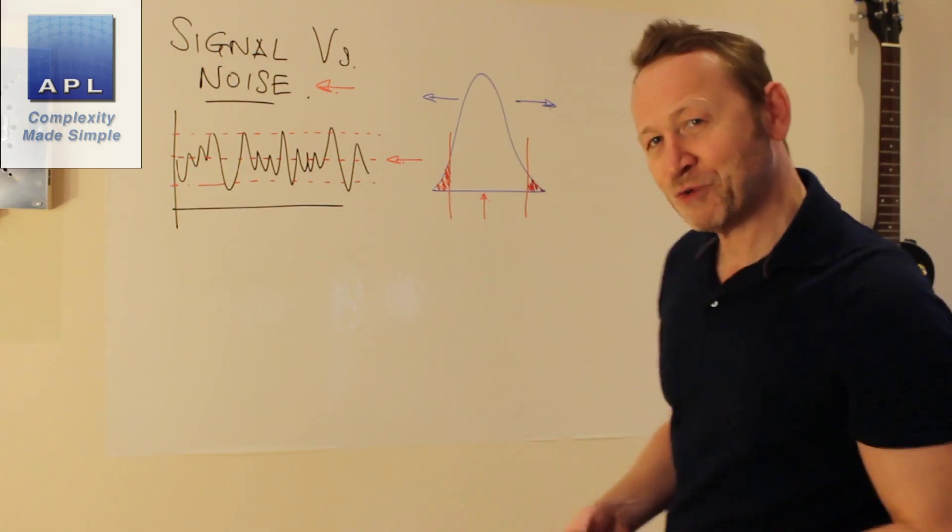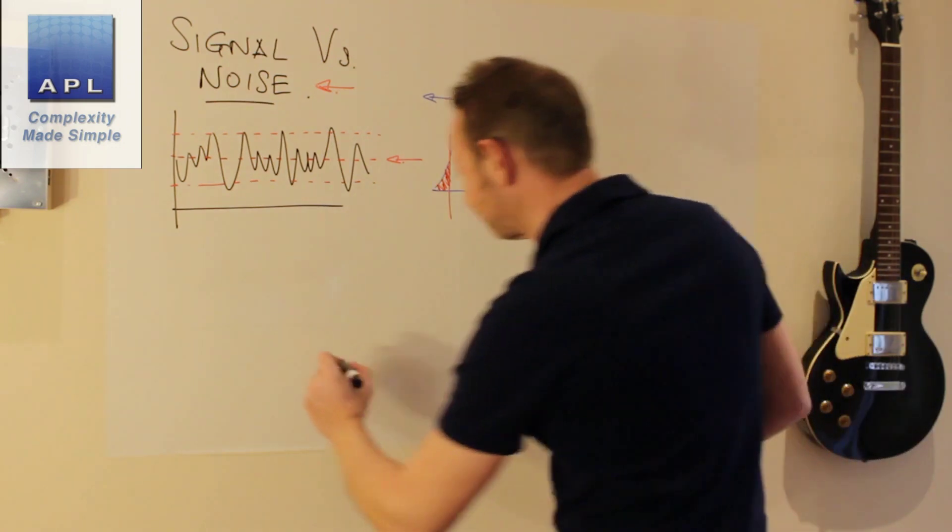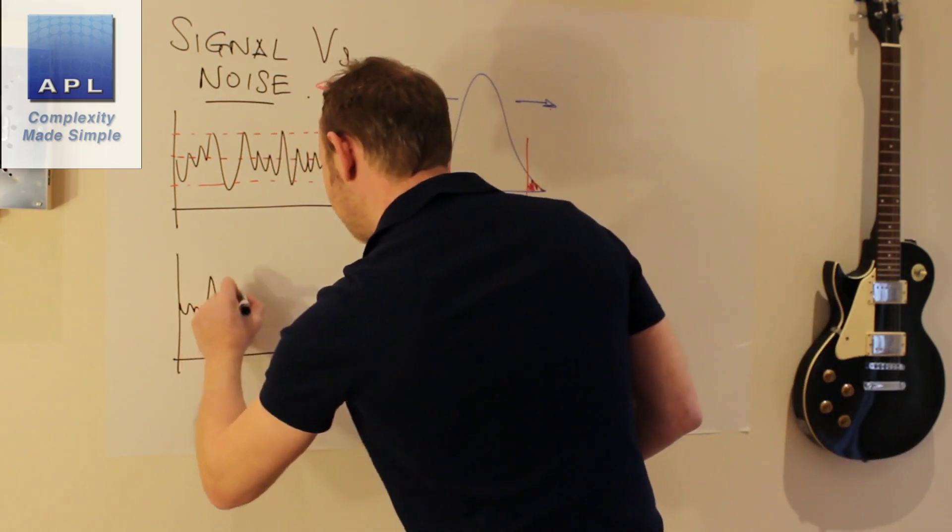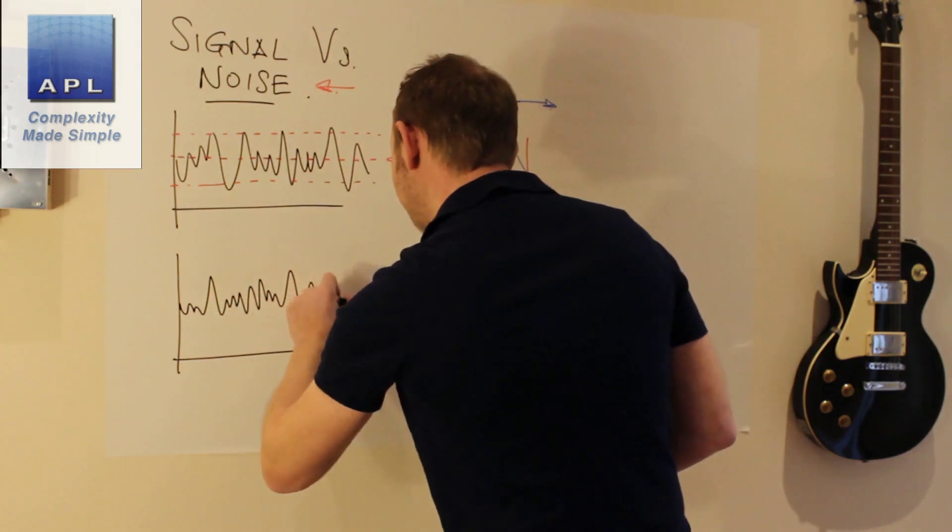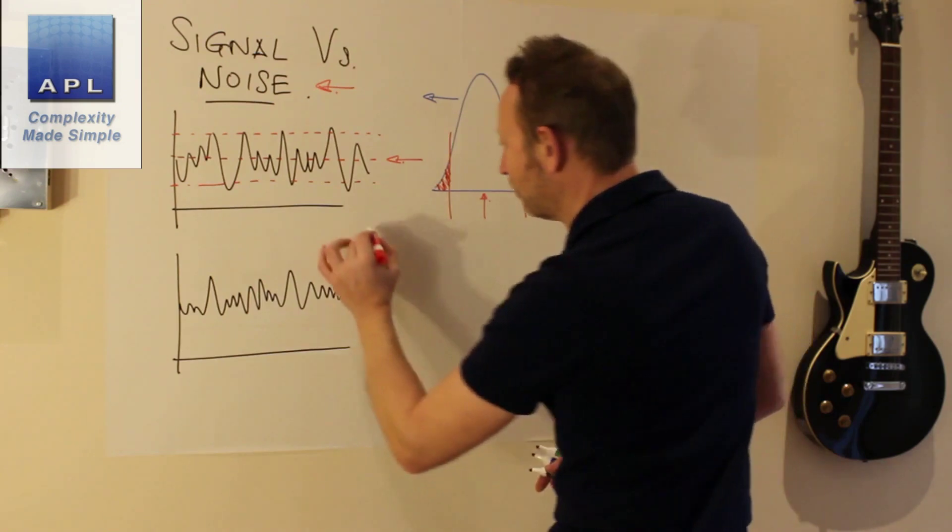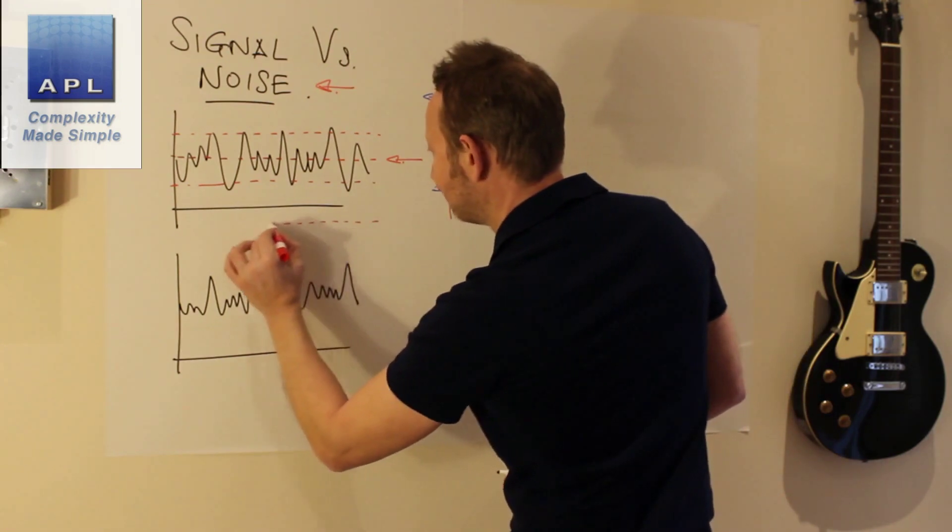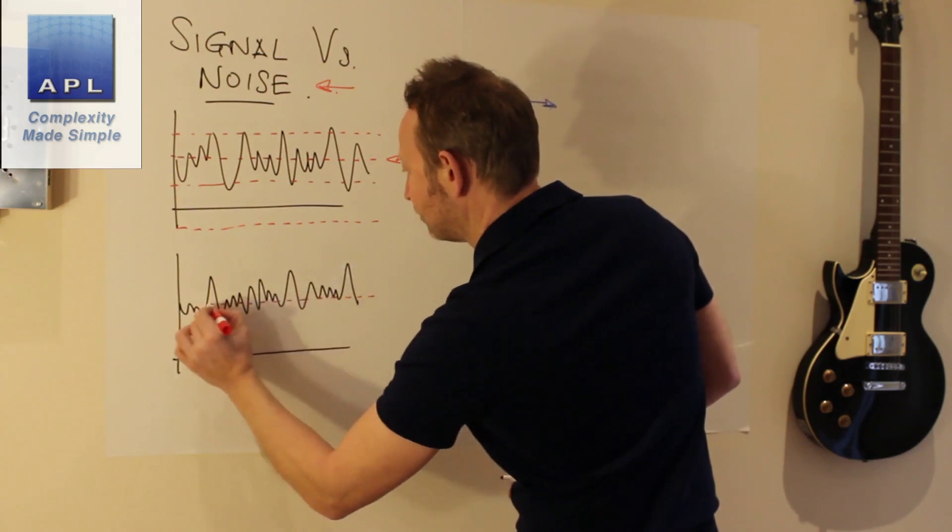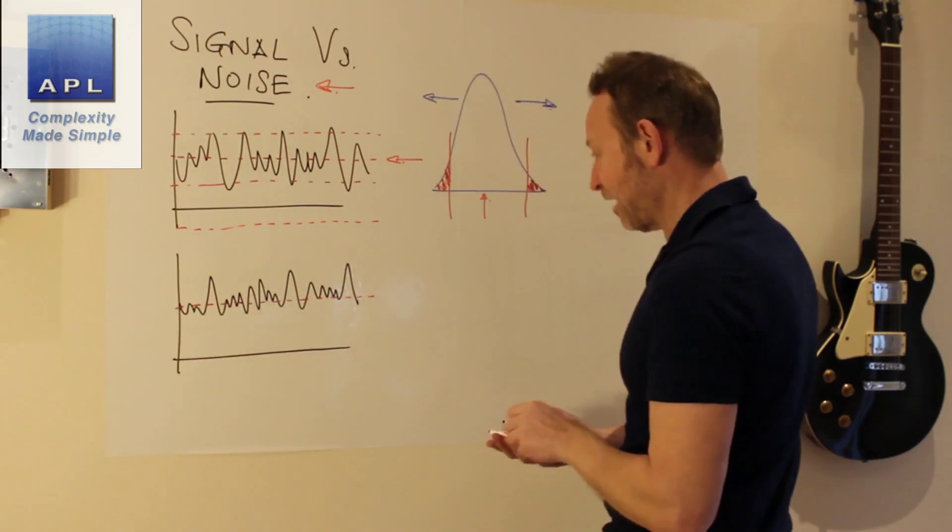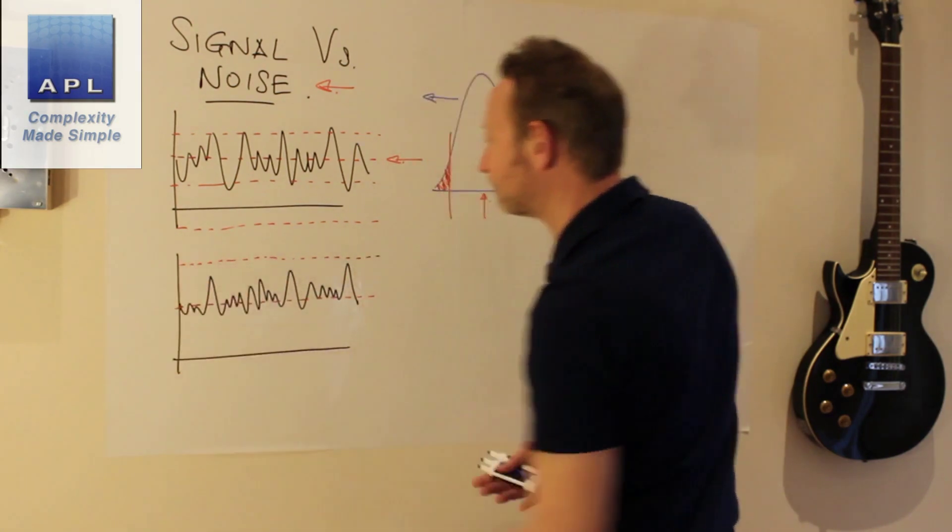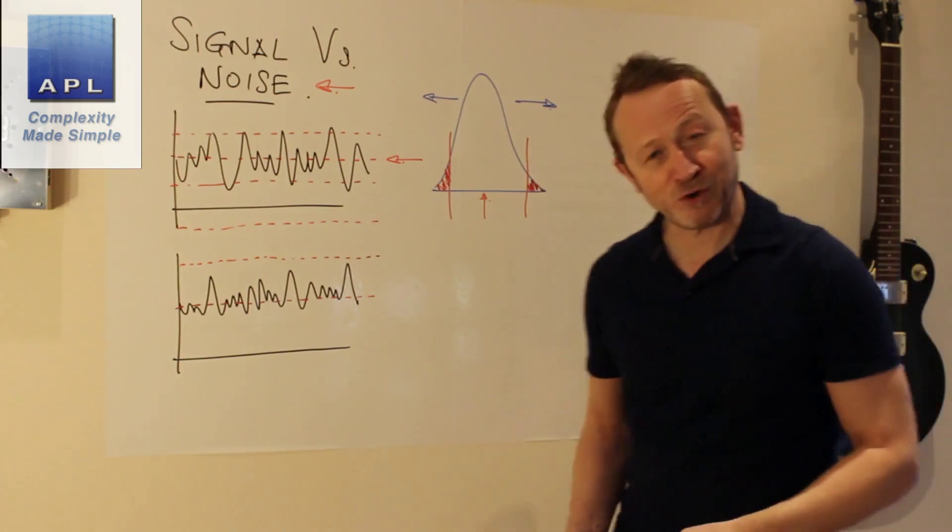Now let's have a look at a problem where the problem is the signal. Got the same process in a sense, the random number generator bouncing around. We'll put an upper tolerance on this thing, a lower tolerance, and we'll put the middle. There's the nominal that we're aiming for.